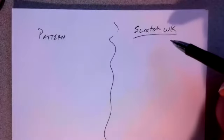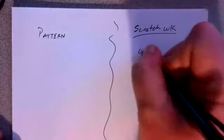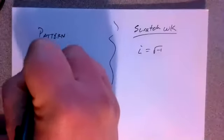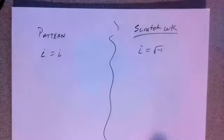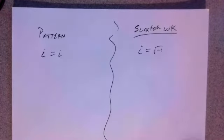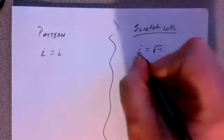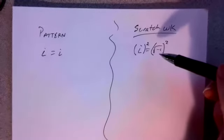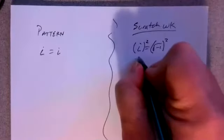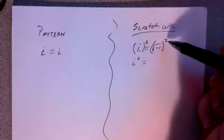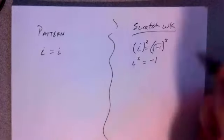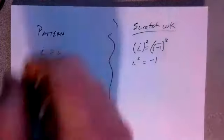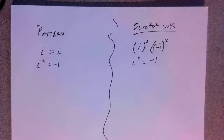We're going to develop that pattern. First things first, we know that i equals the square root of negative 1. For our pattern, I'm going to say that i is the same thing as i. Over here on my scratch work, if I take i and I square it — square the square root of negative 1 — the square root squared cancels out and we're left with negative 1. So i squared is equal to negative 1. In our pattern here, i squared equals negative 1.